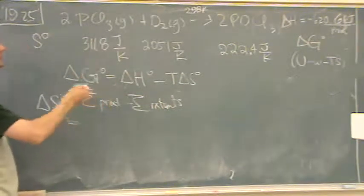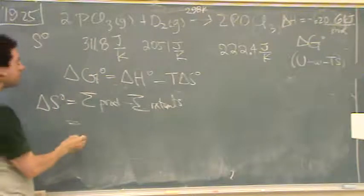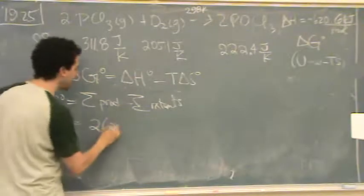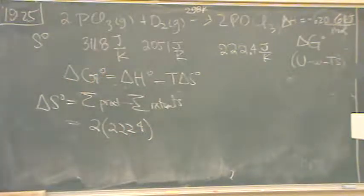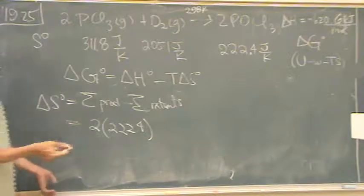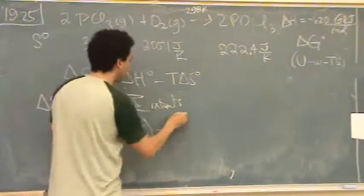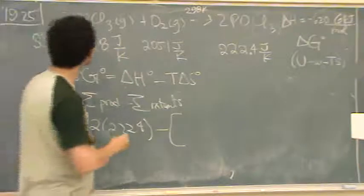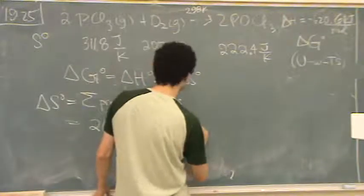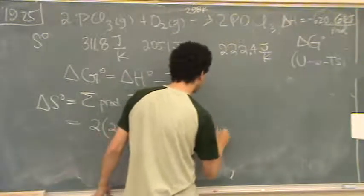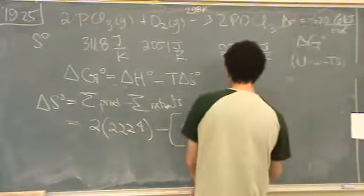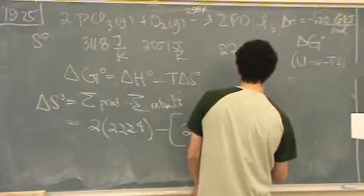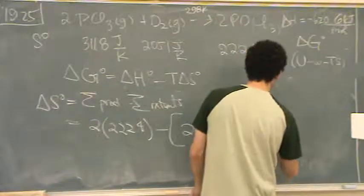So, what you do is go to products. That's POCl3. You have two times that numerical value under there, 222.4. That's joules per Kelvin. That's the sum of all the products. There's no other product. You subtract that off. And I'll put a big bracket to start our reactants because there's more than one. So, two times 311.8 joules per Kelvin plus. So, that's for the PCl3, the phosphorus trichloride. And then for the oxygen, two times 205.1.